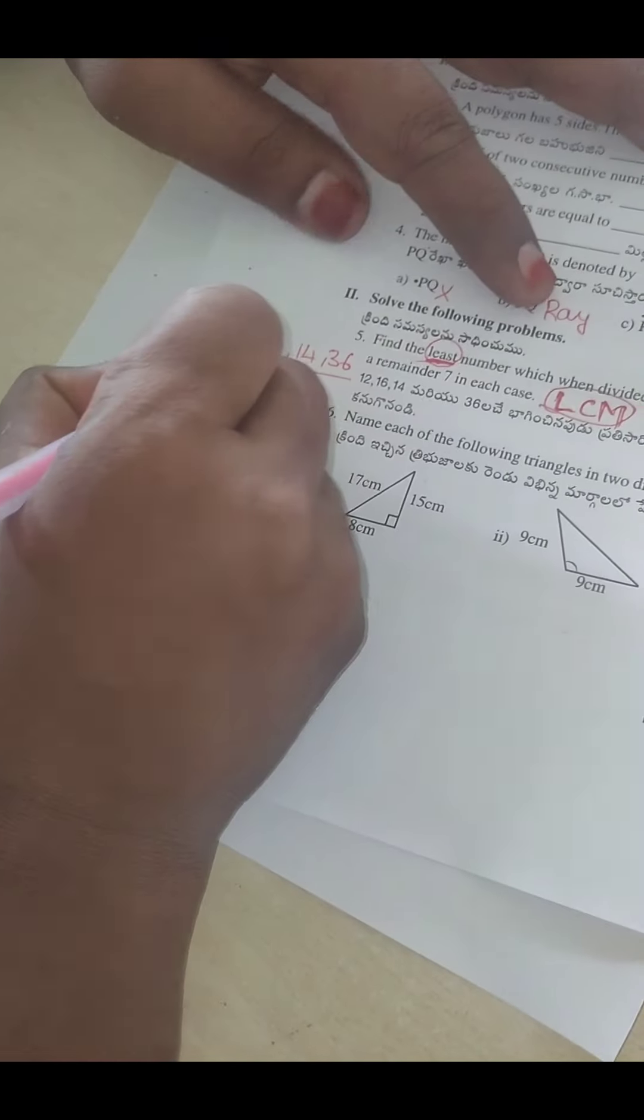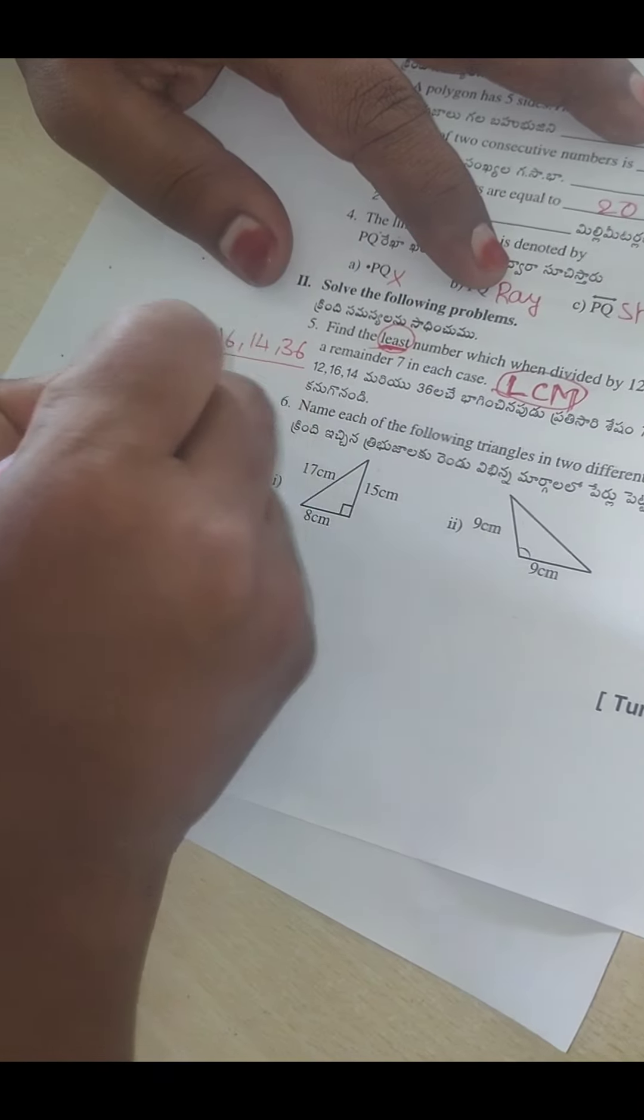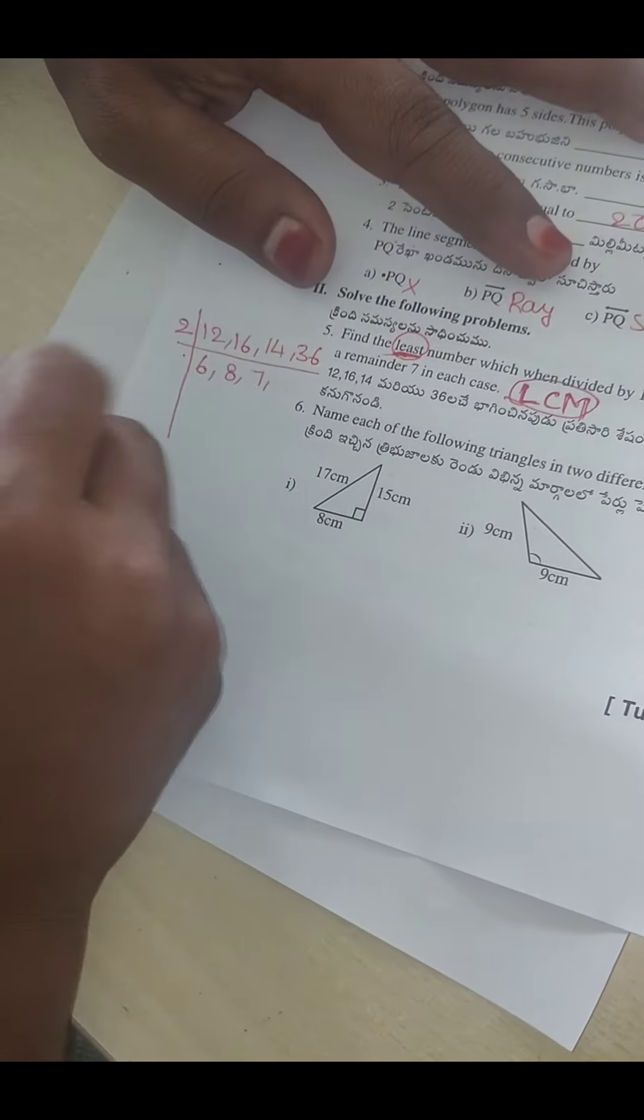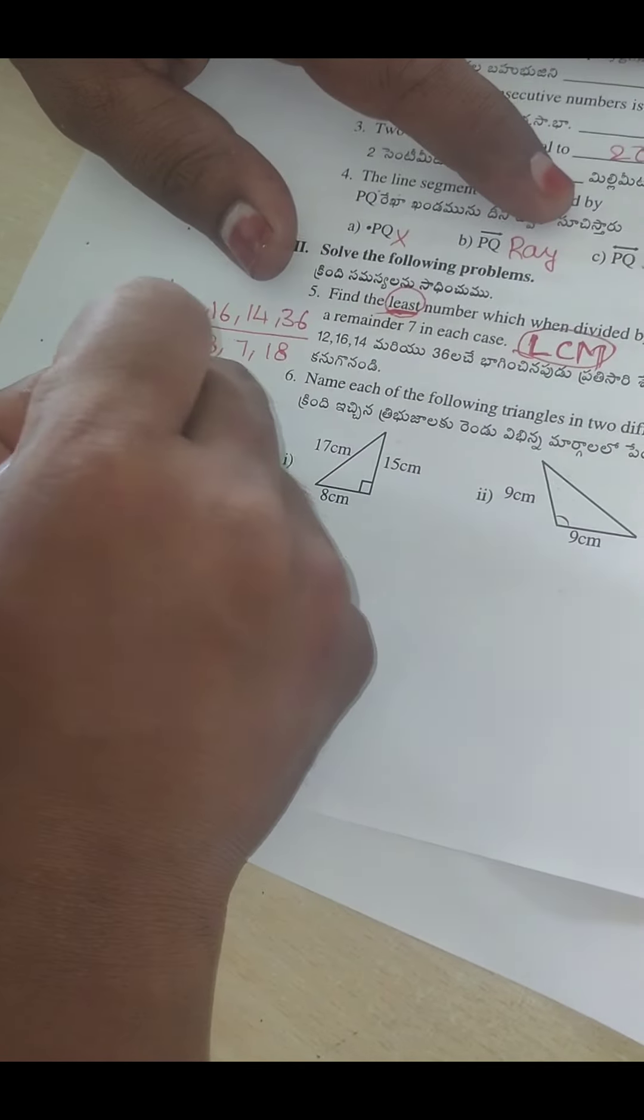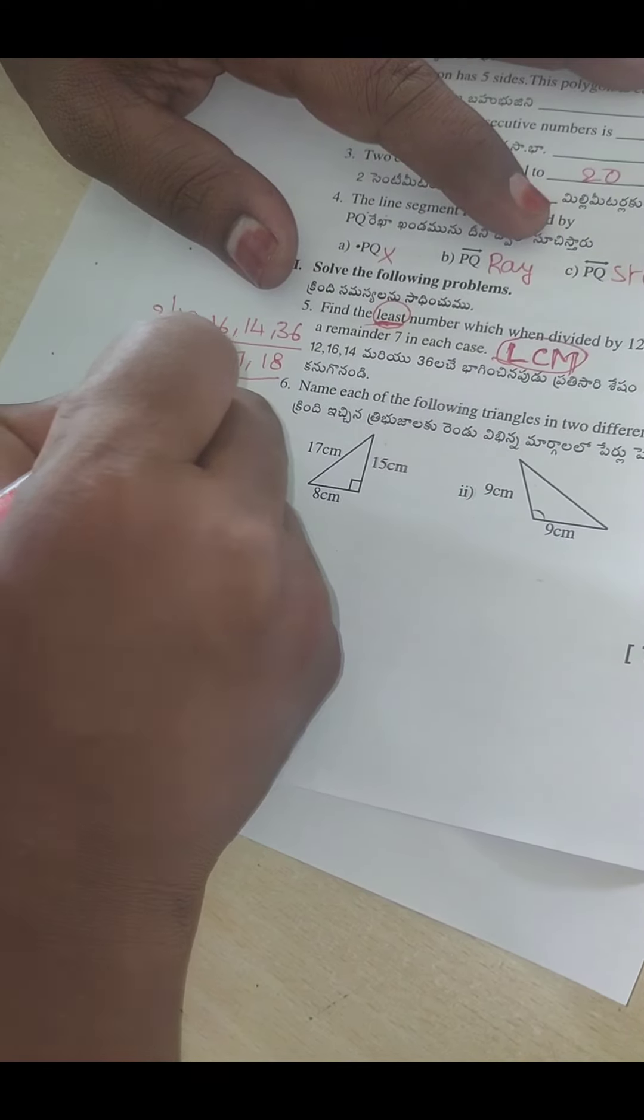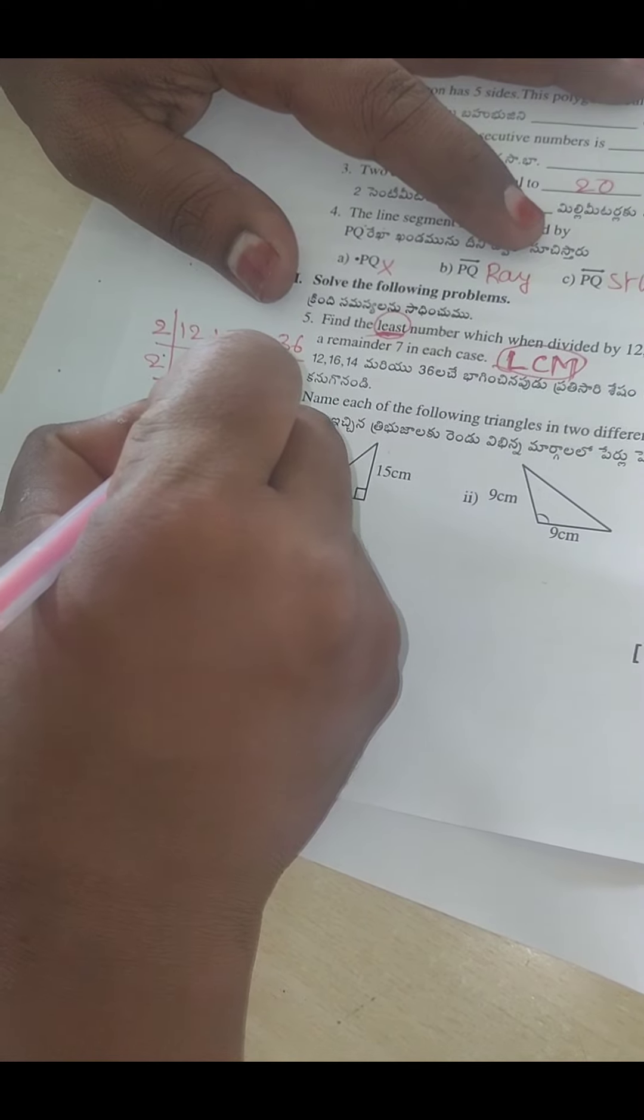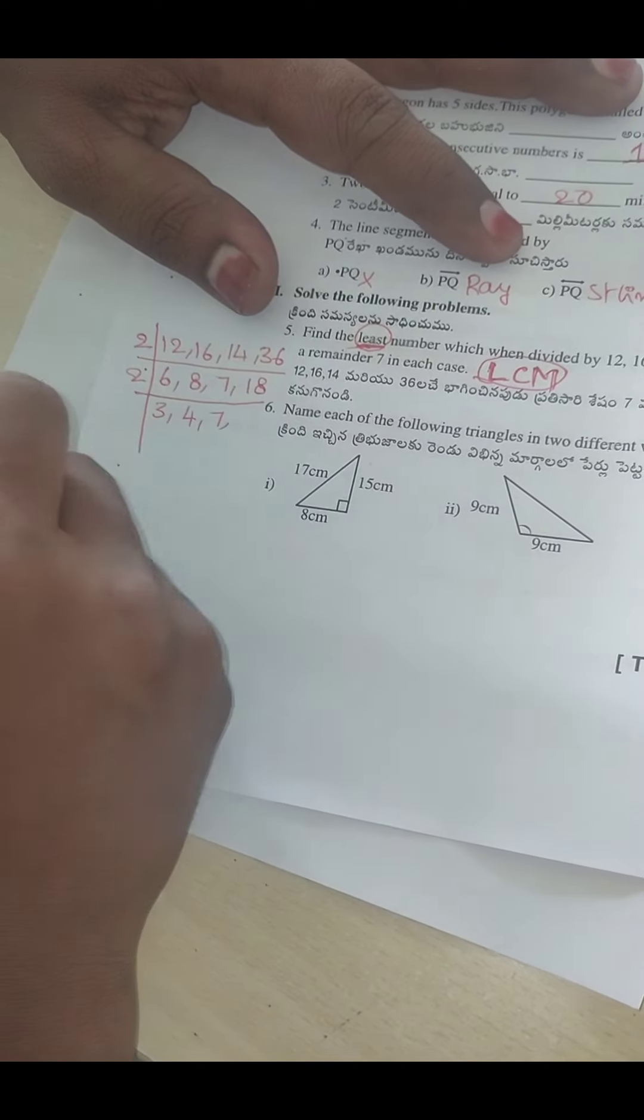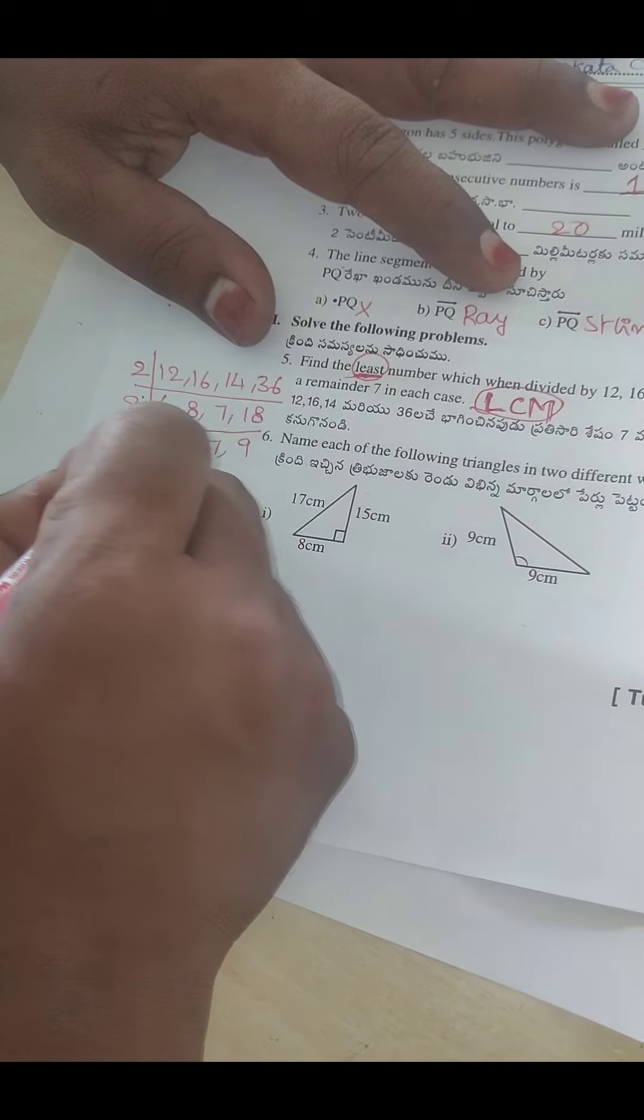Two tables: 12 comes 6 times, 16 comes 8 times, 14 comes 7 times, 36 comes 18 times. Now again we can take two tables. Six comes 3 times, eight comes 4 times. There is no 7 in two tables, so just copy the number. Next, 18 comes in two tables 9 times.